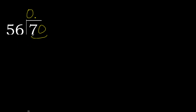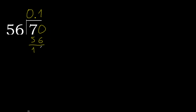70 is not less, therefore work with 70. 56 multiplied by which number is nearest to 70 but not greater? 56 multiplied by 2 is greater; 56 multiplied by 1 — 56 is not greater. Subtract, giving 14. Next.